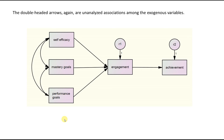In other SEM programs such as LISREL, these covariances among exogenous variables are presented and estimated by default. In AMOS, you actually have to draw these in if you want to assume that these variables are correlated. Generally speaking, it's a good idea to correlate the exogenous predictor variables, as it's fairly untenable to assume no relationships among them unless there is a good theoretical or empirical rationale otherwise.